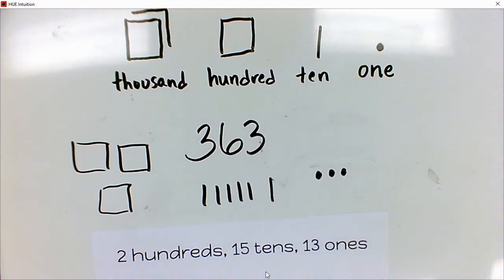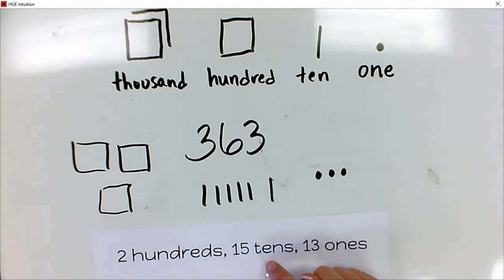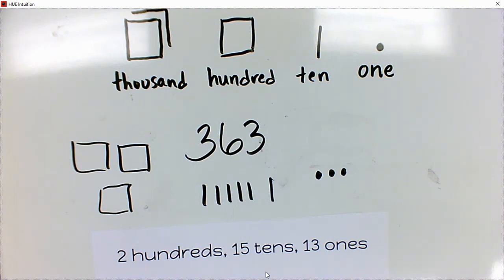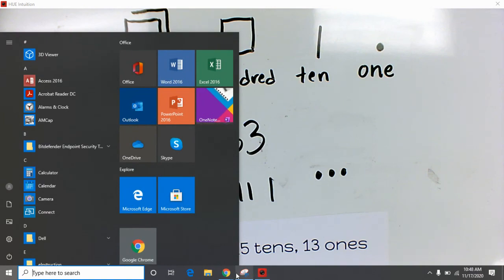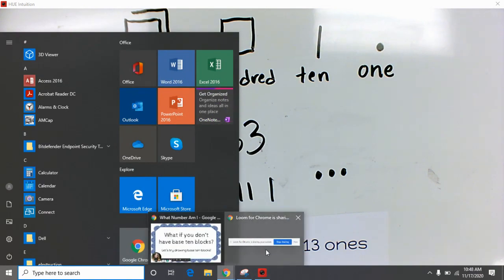So when we're playing 'What Number Am I,' you can think about using base ten blocks or drawing base ten blocks. Remember that if you have a two-digit number in the ones place, tens place, or hundreds place, that's not going to work — you're going to have to regroup, bundle ten of them together, and move them over to make your number work.